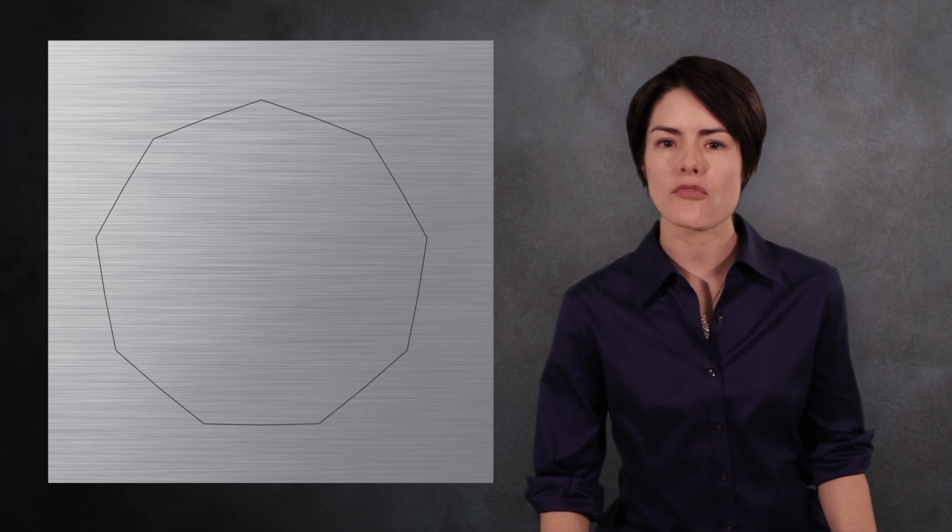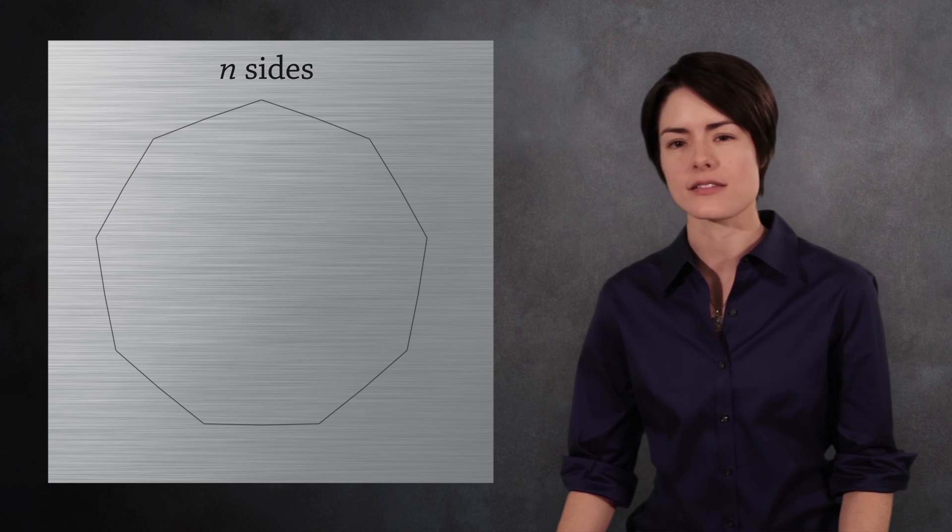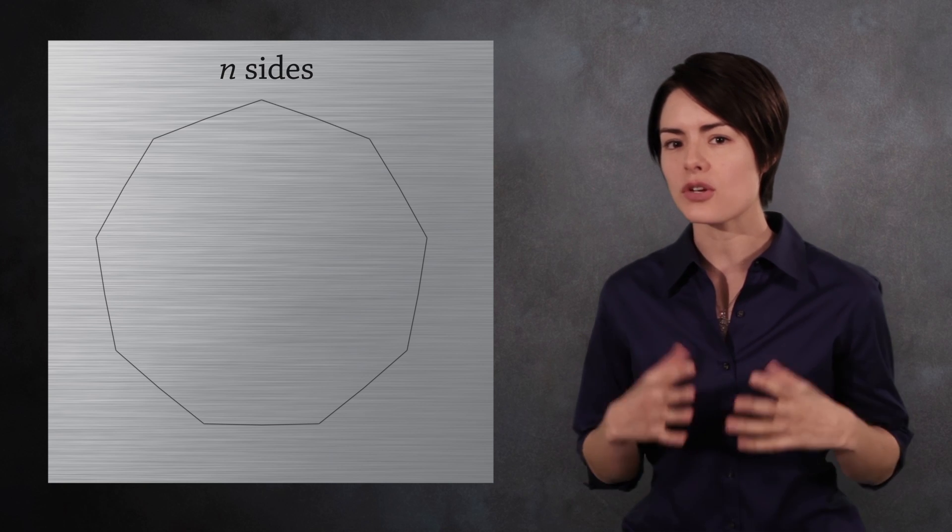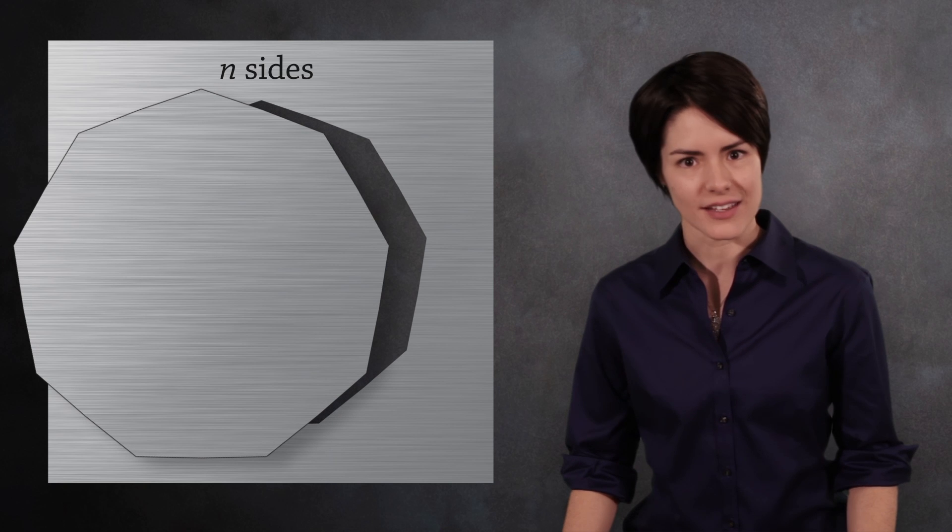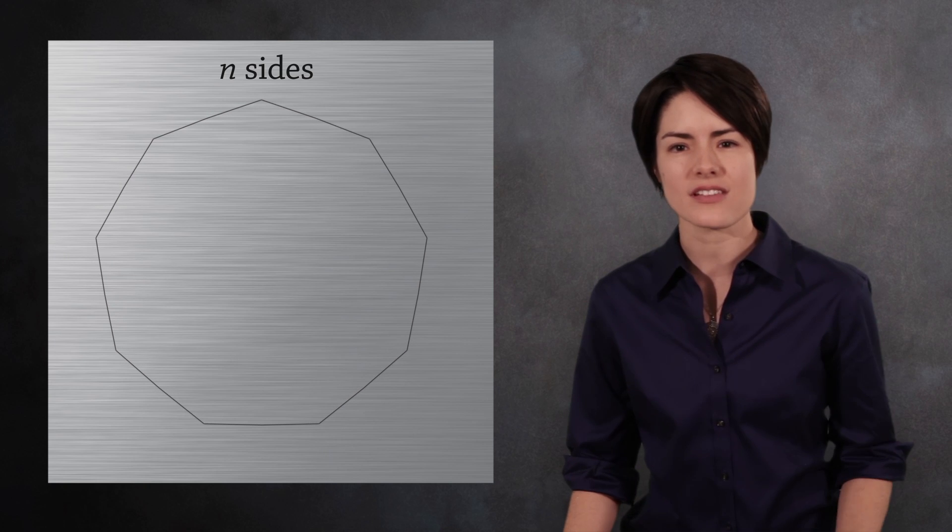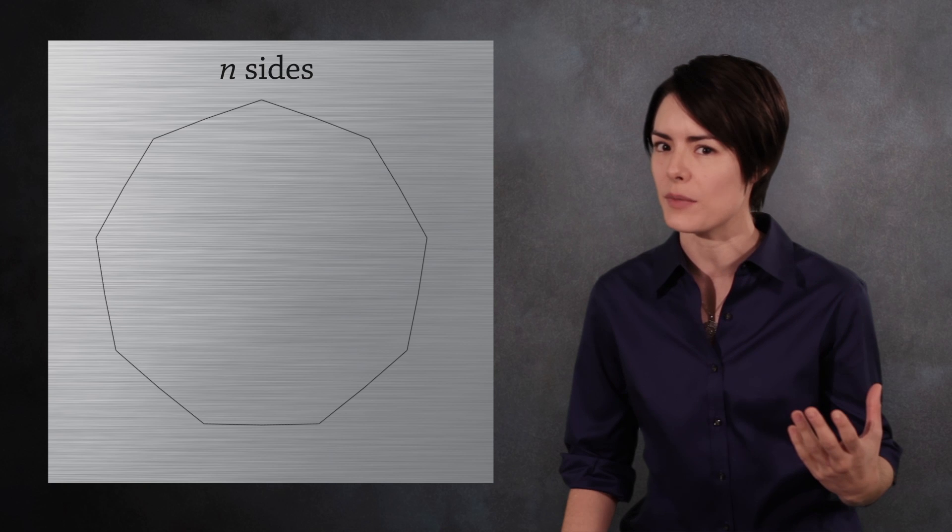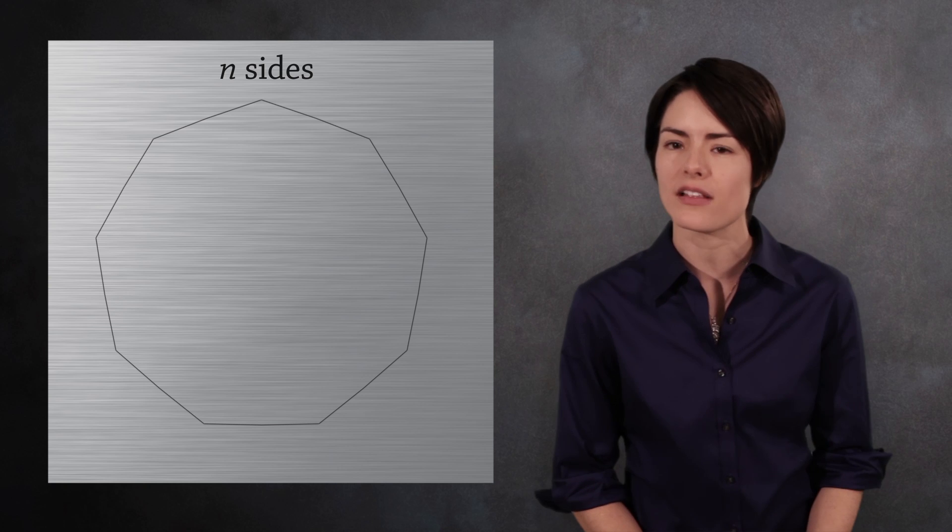Let's look at the symmetries for a regular polygon with n sides. The simplest transformation of all is nothing. The transformation which makes no changes at all will serve as the identity element in the group and is denoted by the letter E.